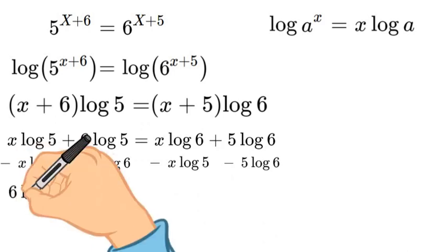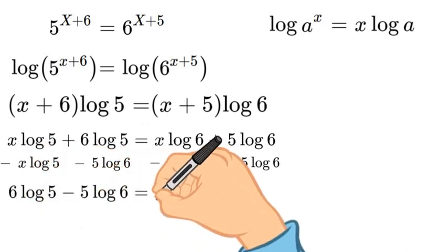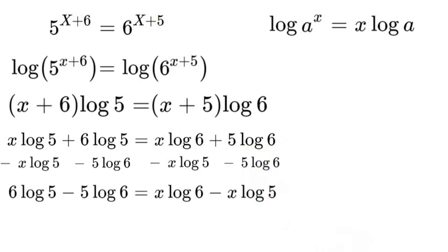Once we have done that, I can simplify it down into 6 log 5 minus 5 log 6 equals x log 6 minus x log 5. We did that so that we can have our x logs on one side and our real number logs on the other side.